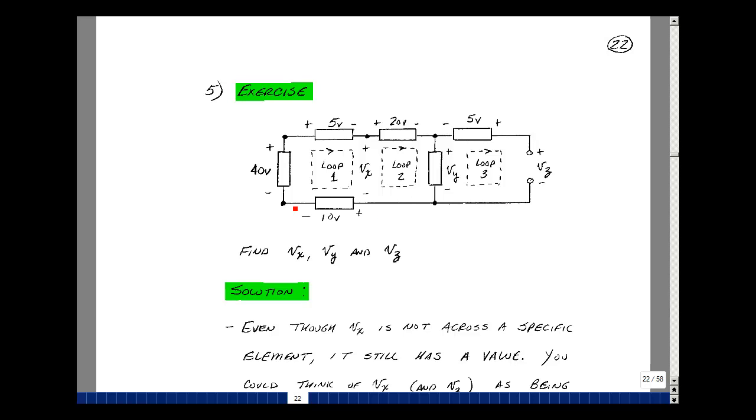The rise in voltage equals the drops. So here's a rise in voltage of 40, a drop of 5, a drop of V sub x, and a drop of 10. Second equation, the rise in voltage would be V sub x, the drop would be 20, and then V sub y. And on the third loop, the rise in voltage would be V sub y, 5, and then V sub z. You can find these equations at the bottom of the page.